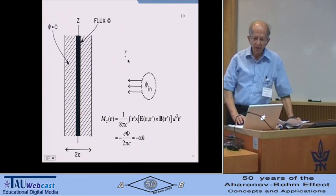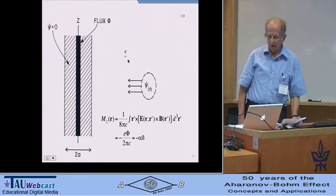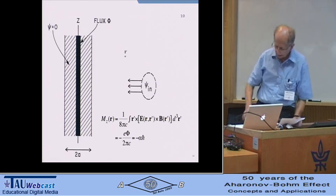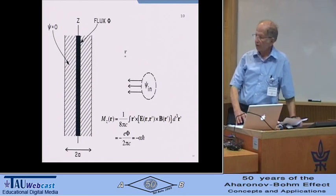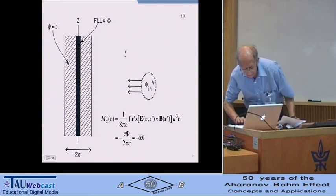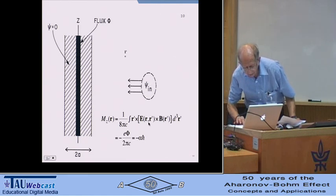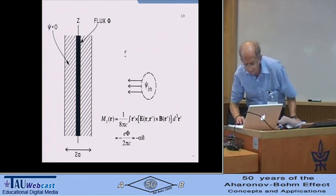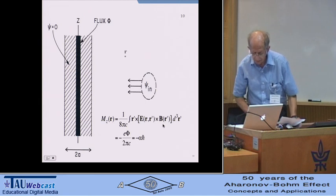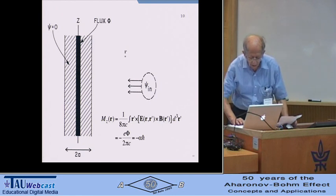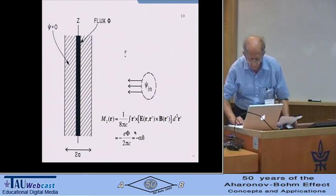And it certainly penetrates into the region where the return flux is, far away, kilometers away, but still is there. And if you calculate the angular momentum in the cross fields, the electric field here is the field at the point r prime due to the electron at point r. Here is the external magnetic field at the point r prime. If you calculate that, it turns out just to be equal to alpha in units of h cross. So that's what that contribution to the angular momentum is.